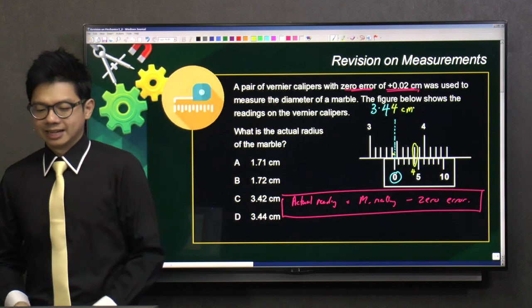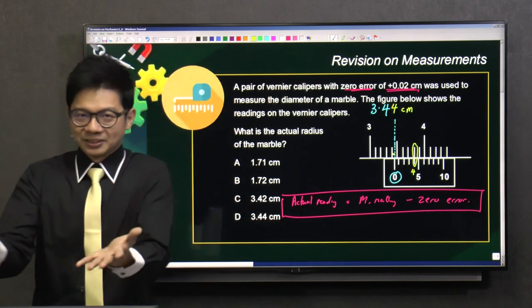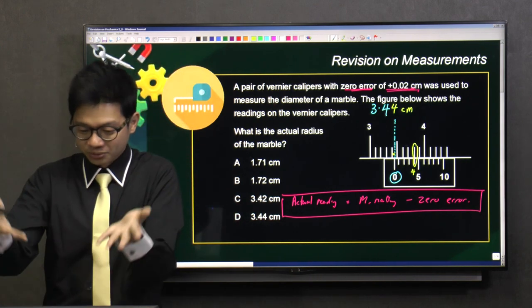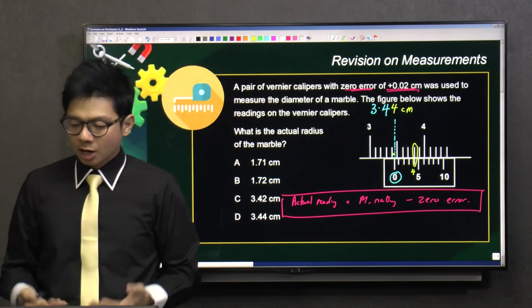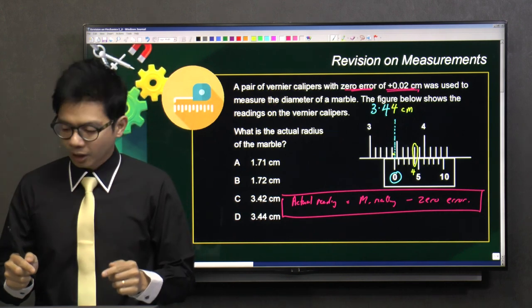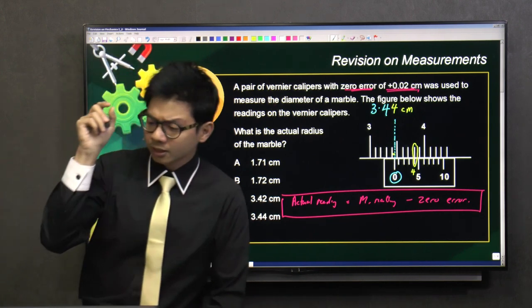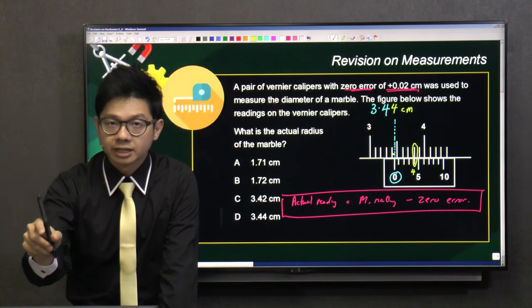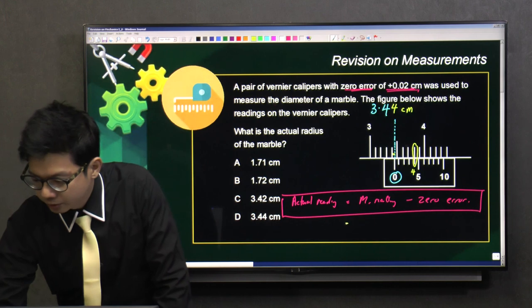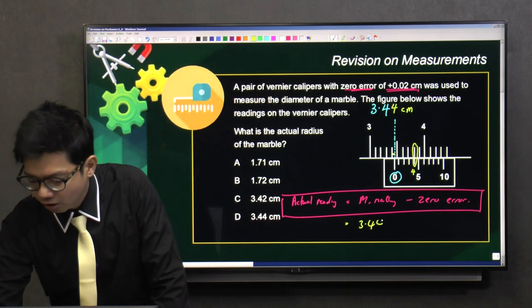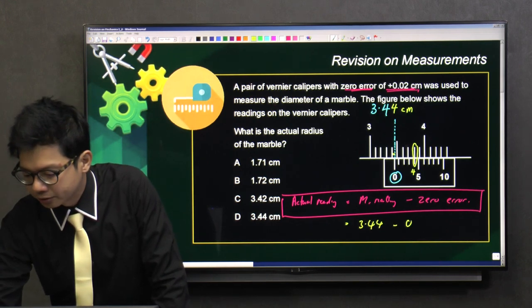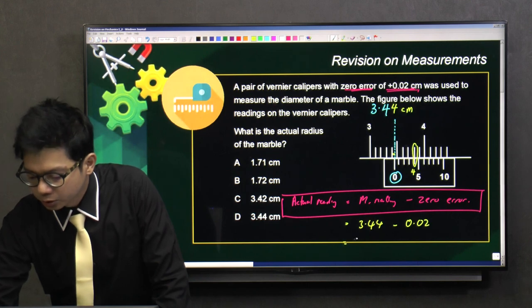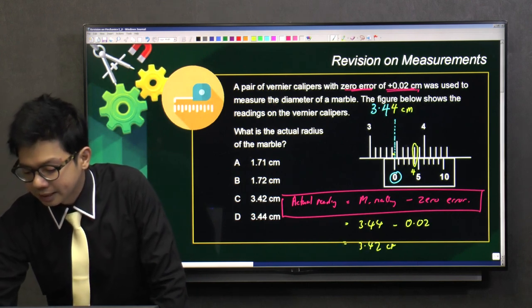And guys, at this point in time, students, once they get this, they just go on to D. D is the answer. But what are we doing now? This is the measured reading. So to find the actual reading, we need to take 3.44 minus the zero error, 0.02. So the actual reading should be 3.42 cm.